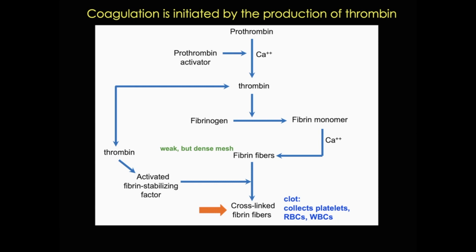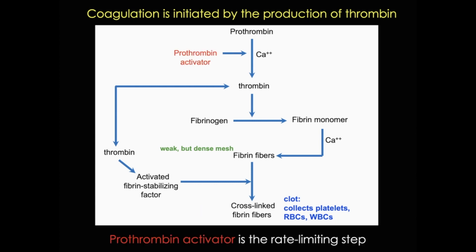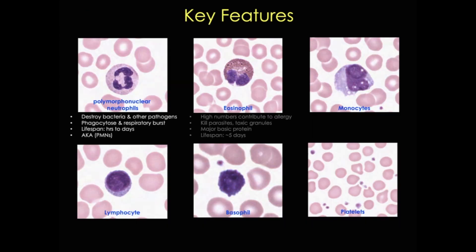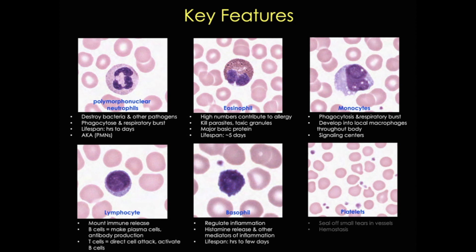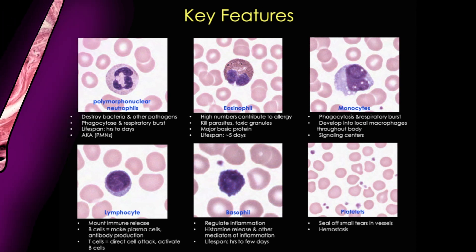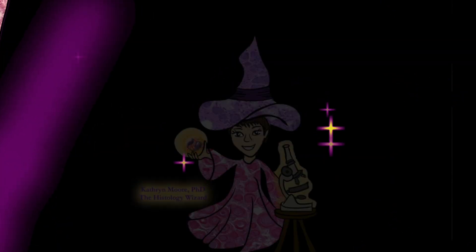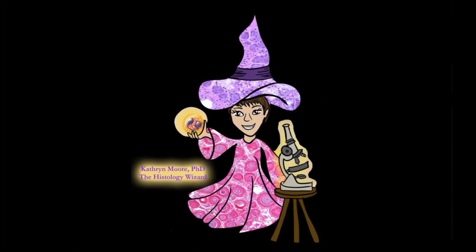Importantly, because the production of thrombin is critical to initiate coagulation, prothrombin activator is the rate-limiting step in this whole process. To conclude this tutorial, I've summarized the key functions of the leukocytes and platelets. Be sure to check out my video Blood Part 1 if you want to learn more about erythrocytes, and check out my hematopoiesis videos to learn about hematopoiesis. Thanks for stopping by.